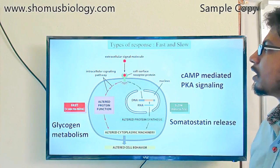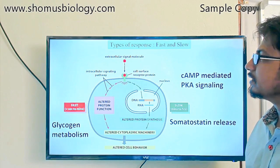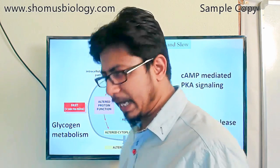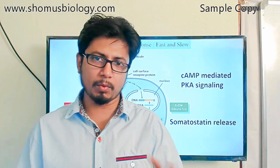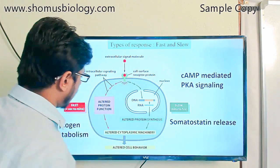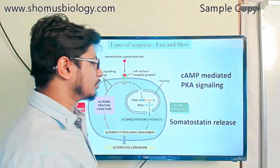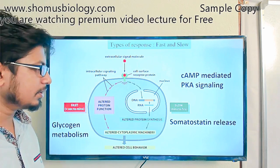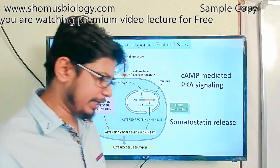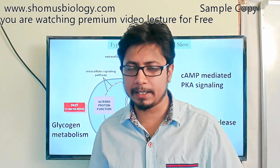Regarding cell signaling, there are two different modes. One is a slow mode and another is a very fast mode of cell signaling. The slow mode continues for minutes to hours, while the fast mode continues in less than seconds. In our body, we have this kind of signaling pattern.